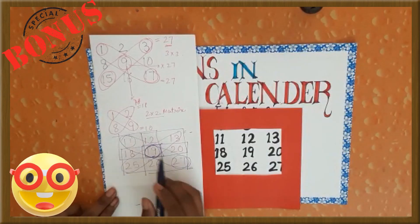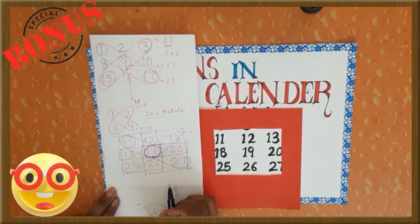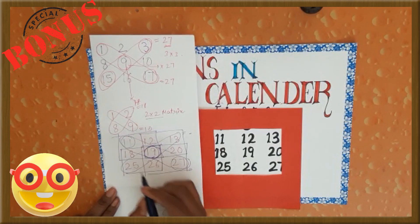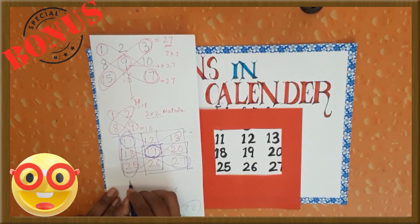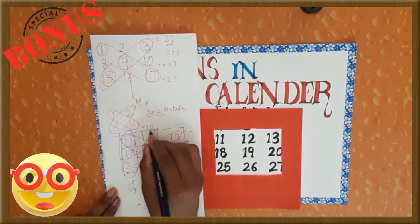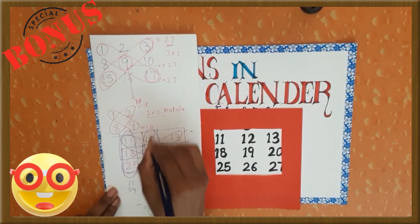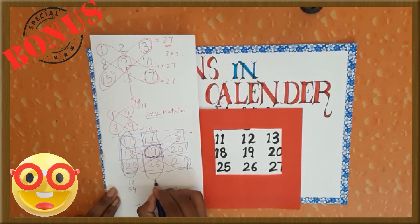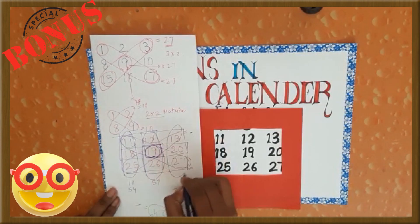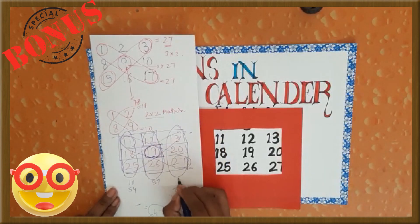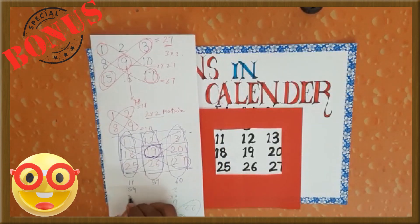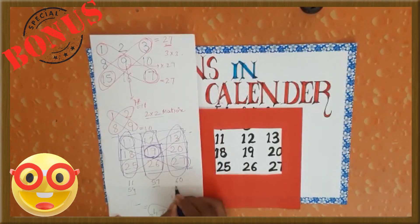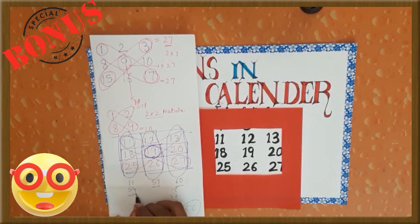Can you see one more pattern in this magic square? The sum of these three numbers is 54, the sum of these three numbers is 57, and the sum of these three numbers is 60. It is progressing at an interval of 3 — 54, 57, 60. Isn't it interesting?